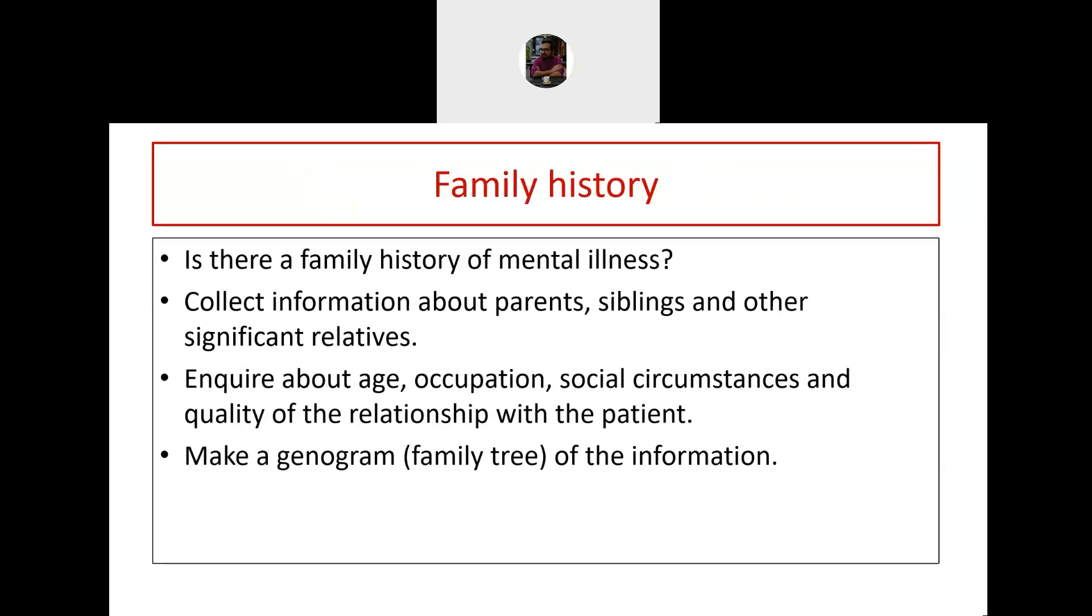Take a proper family history. Is there a family history of mental illness? There are certain mental illnesses that run in families. Although we don't really know the nature of the genetic transmission, many diseases like bipolar disorders and depression can run in families. Collect information about parents, siblings and other significant relatives. Enquire about the age, occupation, social circumstance and quality of relationship with their patient. You can also make a genogram, which is like analyzing the family chart.